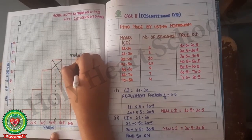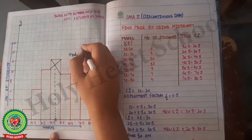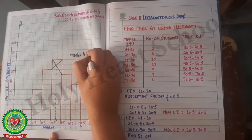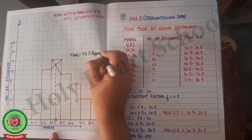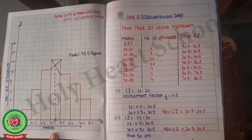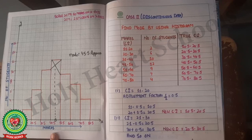The vertical line meets the x-axis within the interval 40.5–50.5, giving the mode as approximately 45.5. As noted, graphical answers are approximate, so we write the answer with an 'approximately' sign. These are both cases for finding mode by using a histogram. I hope both cases are clear, and now you will be able to draw a histogram and find mode using it. Thank you and have a nice day.